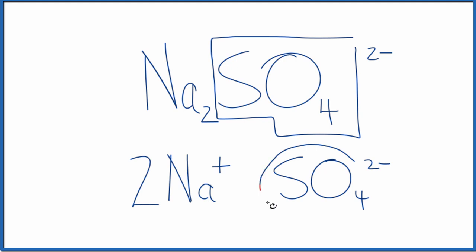And the two minus, it applies to the whole sulfate ion. This will stay together in chemical reactions most of the time. So that's it. Overall, we have three ions, two plus one. And two of those are sodium ions. One is a sulfate ion.